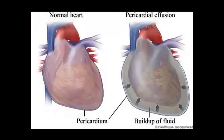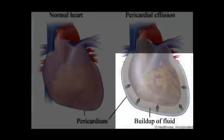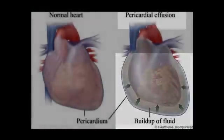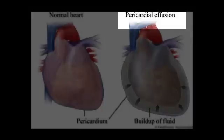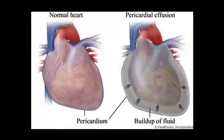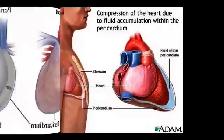If pericarditis becomes severe, the natural response is for the tissues to start secreting fluid. If they secrete too much fluid, you end up with something called a pericardial effusion — an effusion is simply a collection of excess fluid. If that effusion becomes too big, you can end up with something called cardiac tamponade.